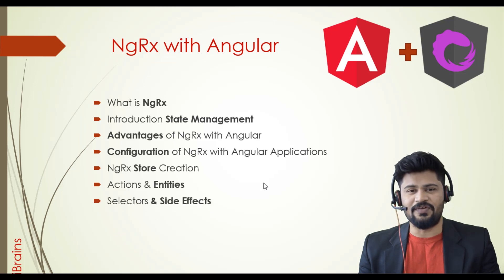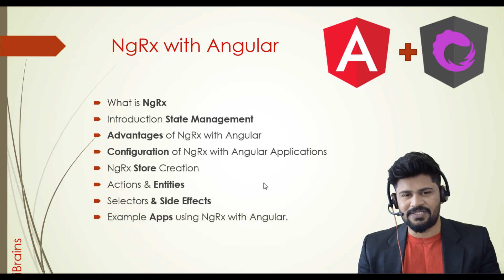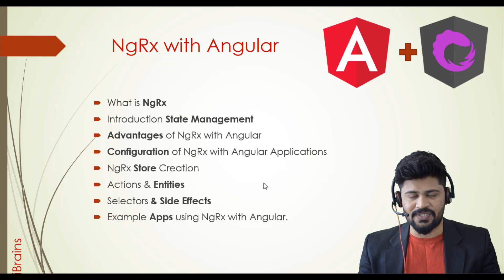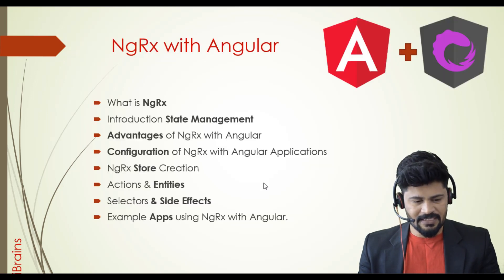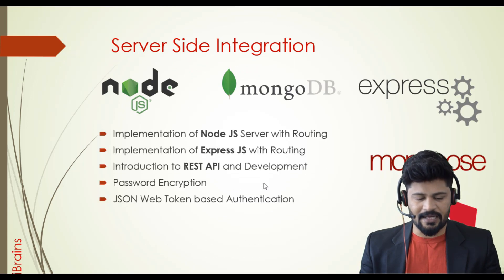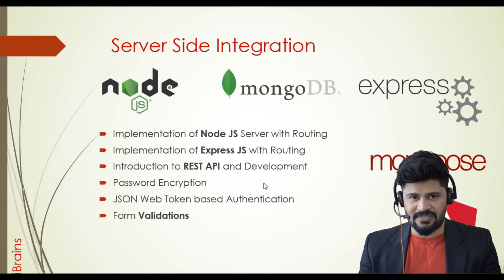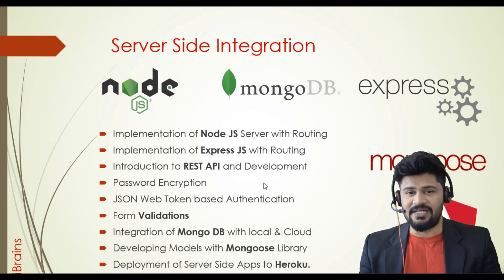In the NGRX module, we develop multiple applications: a Big Basket application, a GitHub search application, and an events booking application. Then we move to server-side integration — creating a server with Node.js, Express.js, REST API, and MongoDB — and we also deploy the server-side application to Heroku.